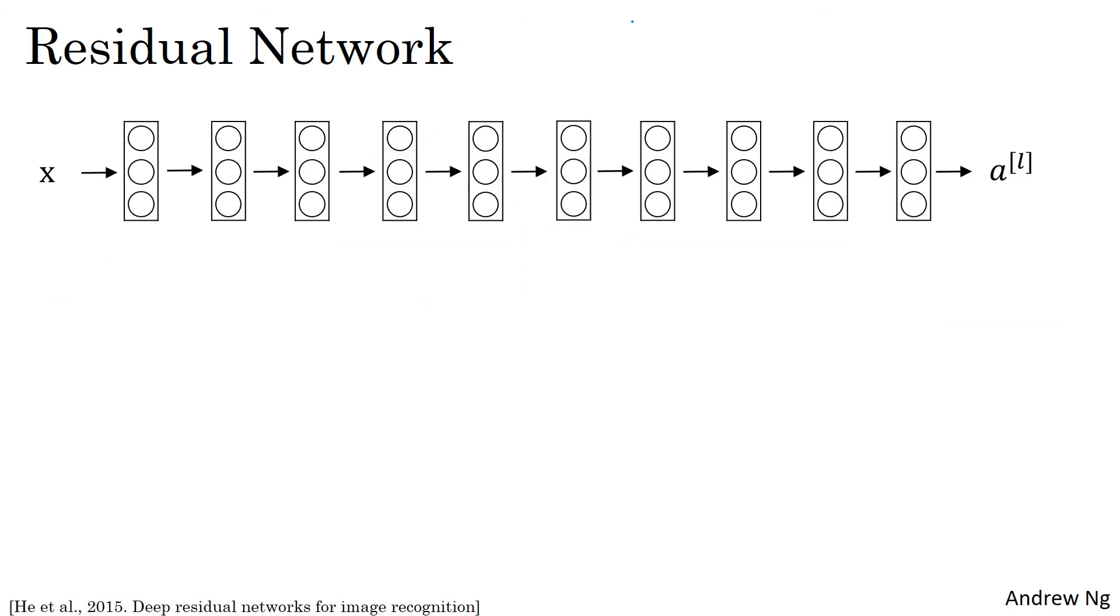So let's look at this network. This is not a residual network. Let's call this a plain network. This is the terminology of the ResNet paper. To turn this into ResNet, what you do is you add all those skip connections, all those short circuit connections, like so. So every two layers ends up with that additional change that we saw on the previous slide to turn each of these into a residual block. So this picture shows five residual blocks stacked together, and this is a residual network.